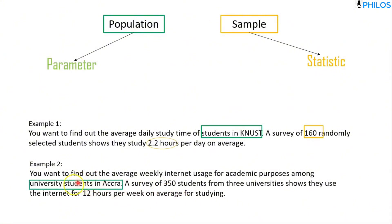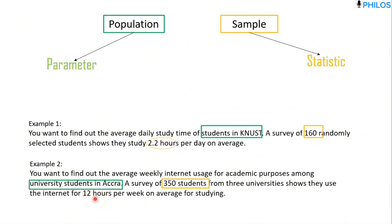The population is going to be all university students in Accra. But the survey of 350 students from three universities in Accra — those 350 students are the sample. The mean of 12 hours per week was calculated using that sample of 350 students, not all university students in Accra. So since this mean of 12 hours was not calculated from the entire population, the 12 hours is a statistic, not a parameter.